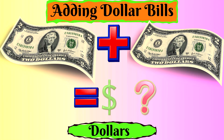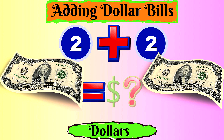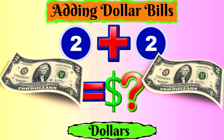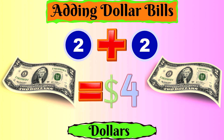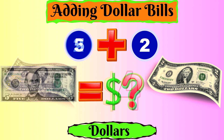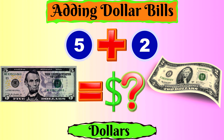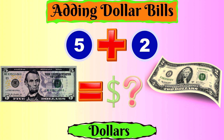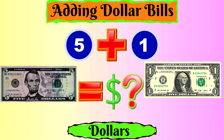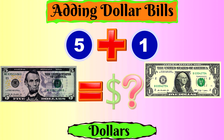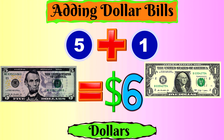Let's add dollar bills. Two dollars plus two dollars equals four dollars. Five dollars plus two dollars equals seven dollars. Five dollars plus one dollar equals six dollars.